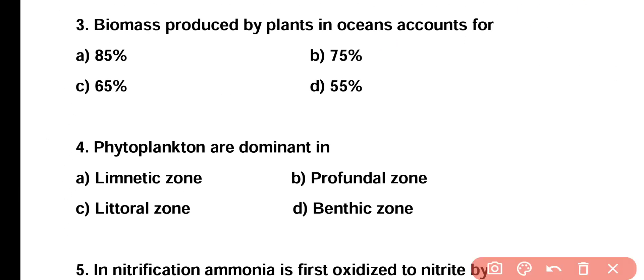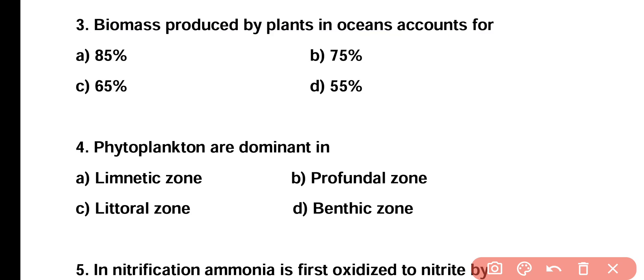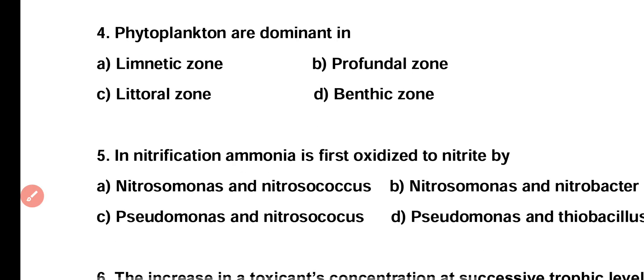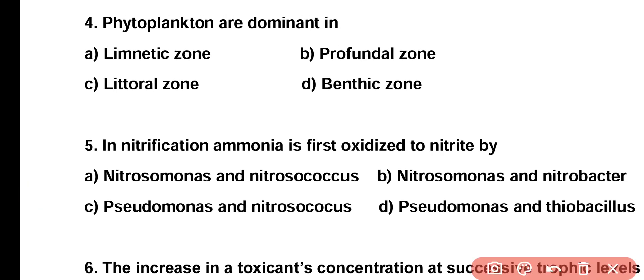Question number three: biomass produced by plants in ocean accounts for what percentage? 85%, 75%, 65%, or 55%? Correct answer is option A. Biomass production by producers or plants in the ocean accounts for 85 percent.